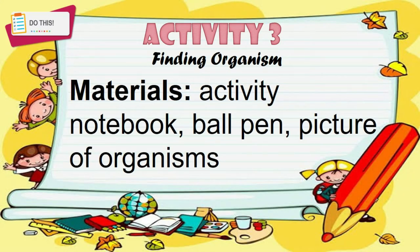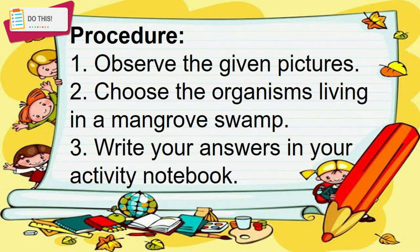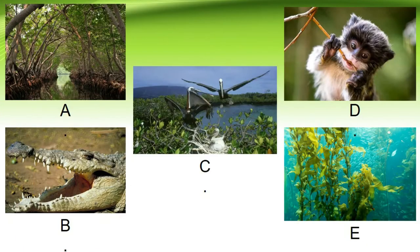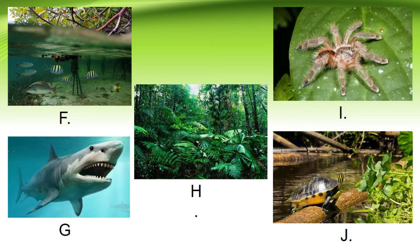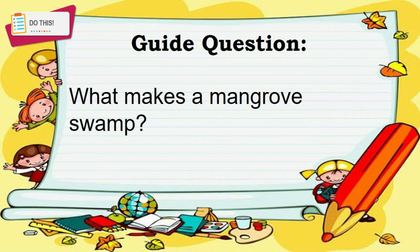Activity 3 is entitled 'Finding Organisms.' Materials needed: Activity Notebook, Ball Pen, and pictures of organisms. Procedure: Observe the given pictures and choose the organisms living in a mangrove swamp. Write your answers in your Activity Notebook to be collected by your science teacher. You can pause the video to observe the pictures — Picture A through Picture J. Answer the guide question: What makes a mangrove swamp?